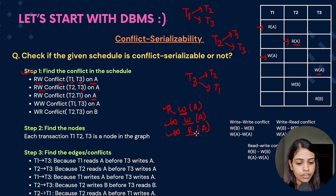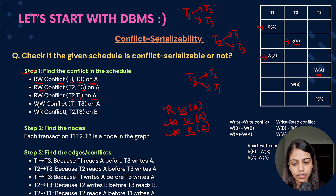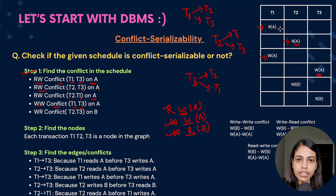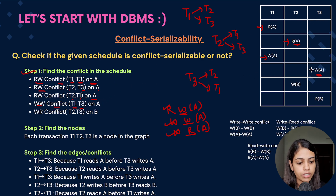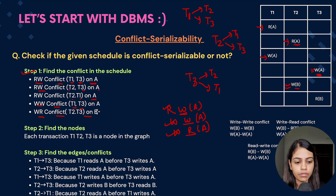For write-A in T1, checking for read-A or write-A in remaining operations: there is a write-A in T3, so there is a write-write conflict between T1 and T3 on A. For write-A in T3, no further read or write of A is present. For write-B in T2, there is a read-B in T3, giving a write-read conflict between T2 and T3 on B. For read-B in T3, no further conflicts are found.